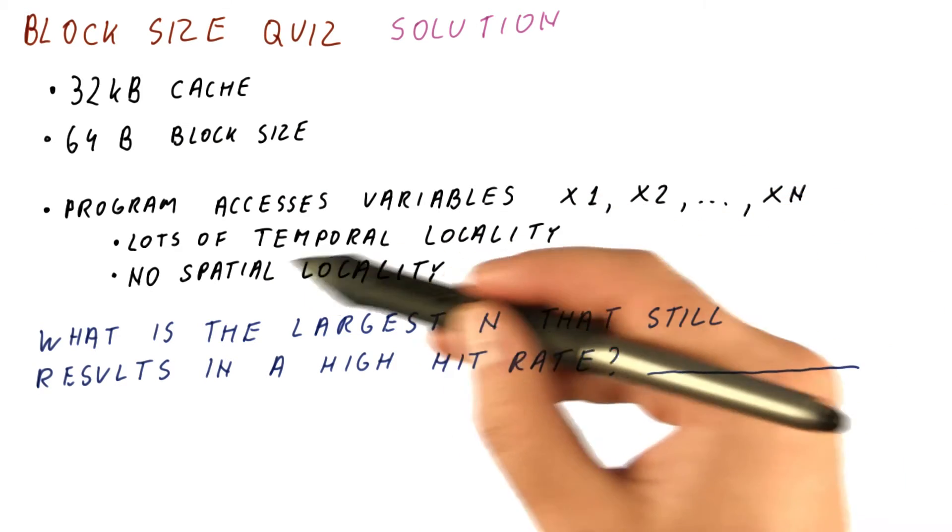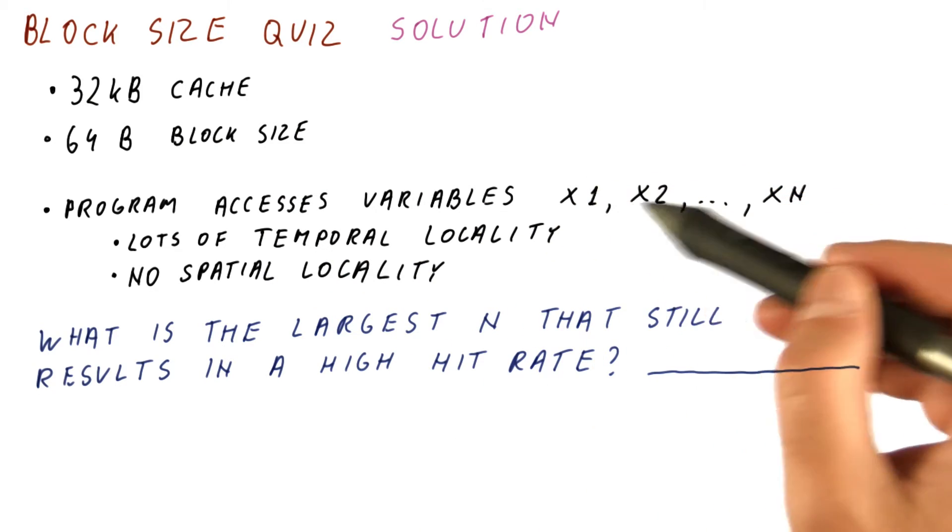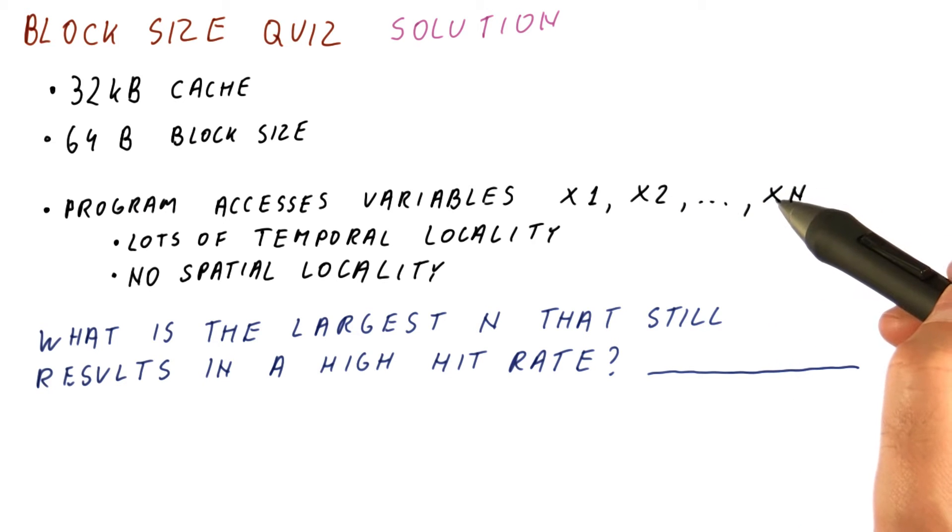If we want to have a high hit rate, because these variables have lots of temporal locality, we want all of them to remain in the cache. That is, we want all of them to fit in the cache.